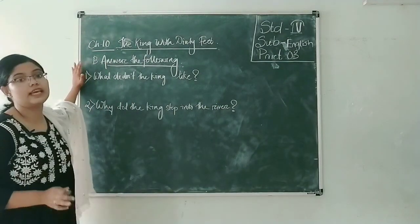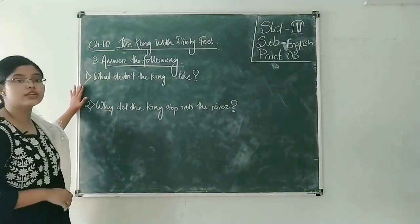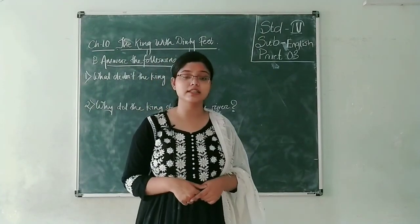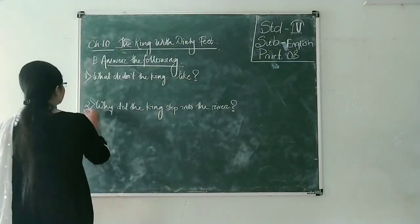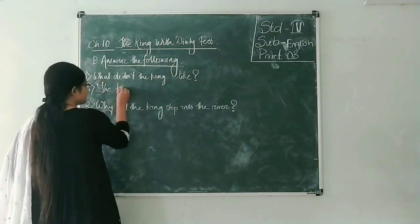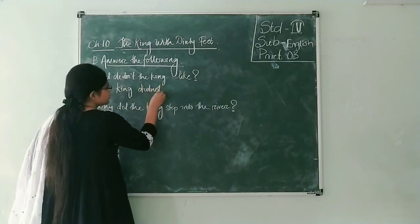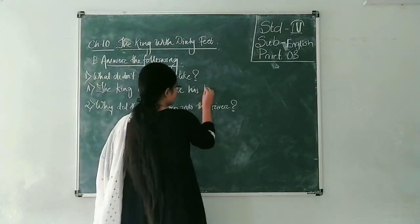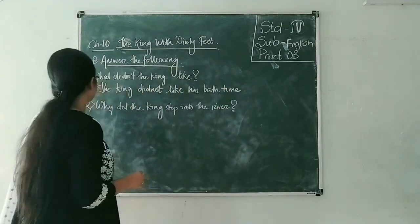Look at question number B — answer the following. Question number one: 'What did the king not like?' The king did not like his bath time. In fact, he hated his bath time. Write it along with me. Answer: The king did not like his bath time.